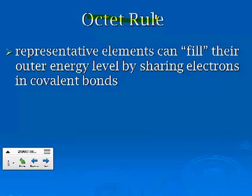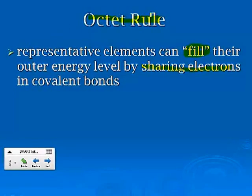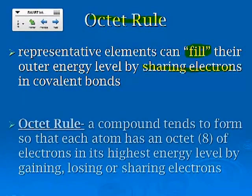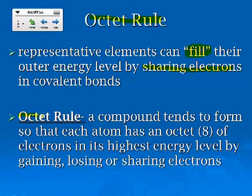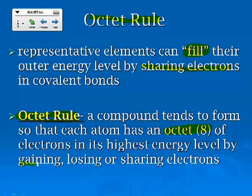We've talked about the fact that a lot of atoms want to fill their outer energy shells by sharing electrons and covalent bonds, and they want to follow the octet rule. The octet rule refers to the fact that a compound will tend to form so that each atom has an octet or eight electrons in its highest energy level by gaining, losing, or sharing electrons.